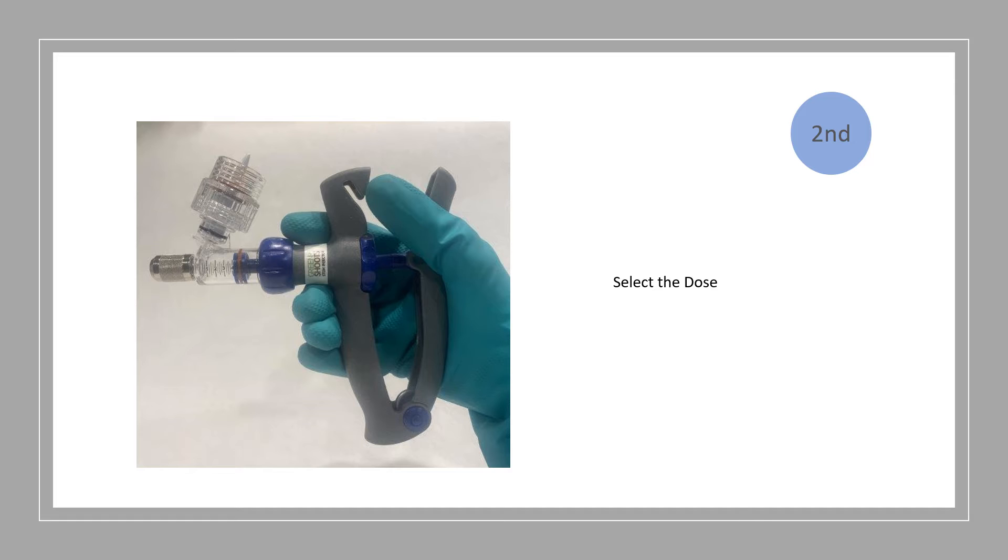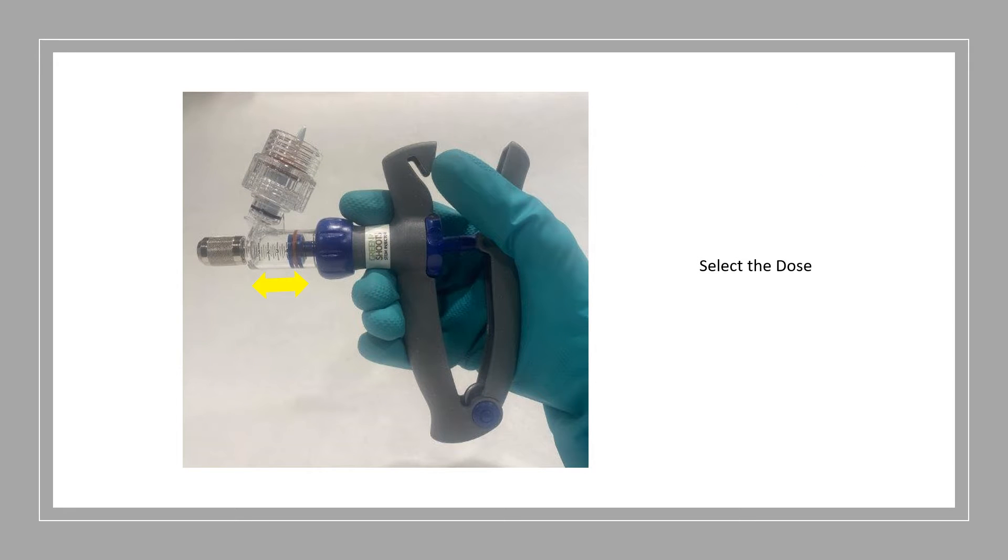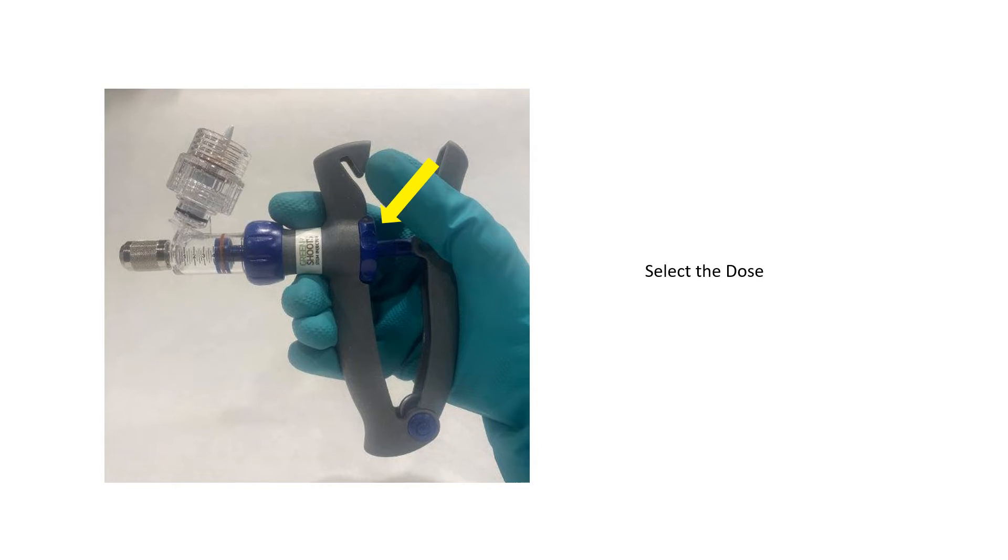Once you have put on your PPE, you'll select the dose. This involves making adjustments in the position of the plunger. You make the adjustments with the dosage adjuster, indicated by the arrow.